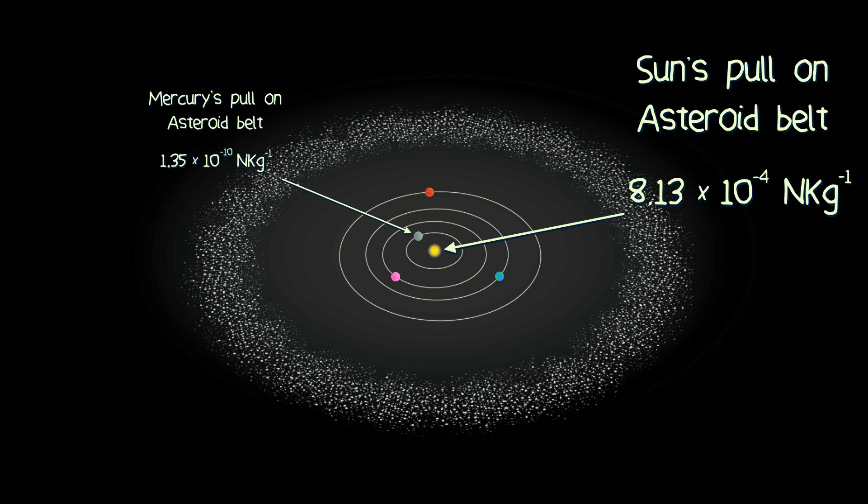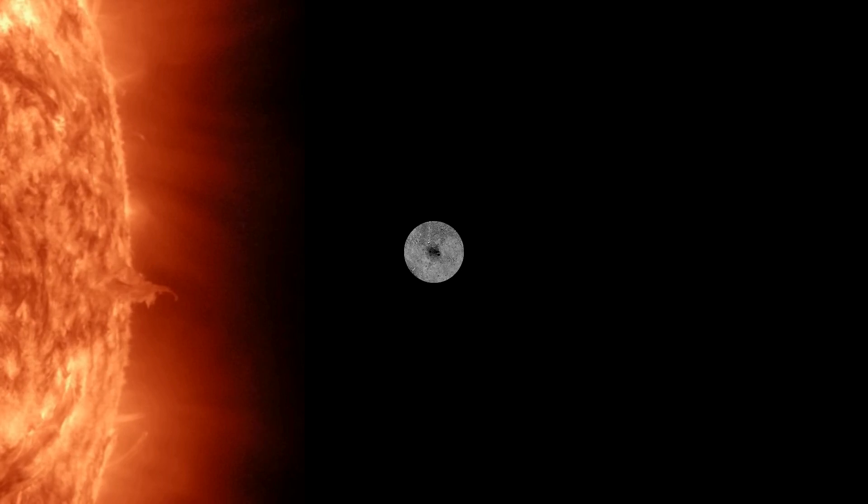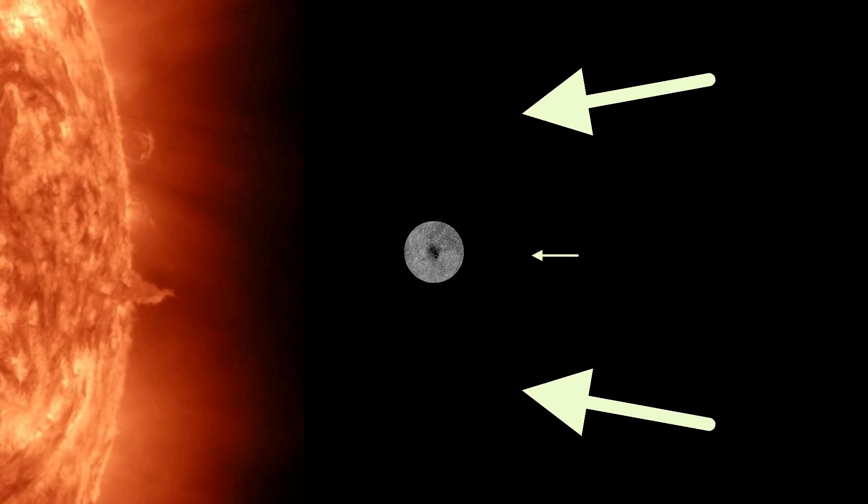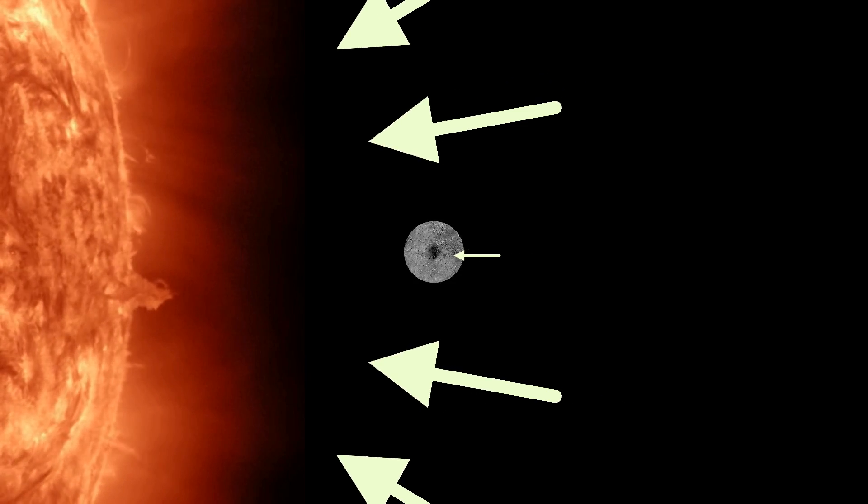Mercury has virtually no effect on the objects of the asteroid belt, and because it's so close to the heaviest object in the solar system, everything is going to be drawn to the sun, not Mercury.